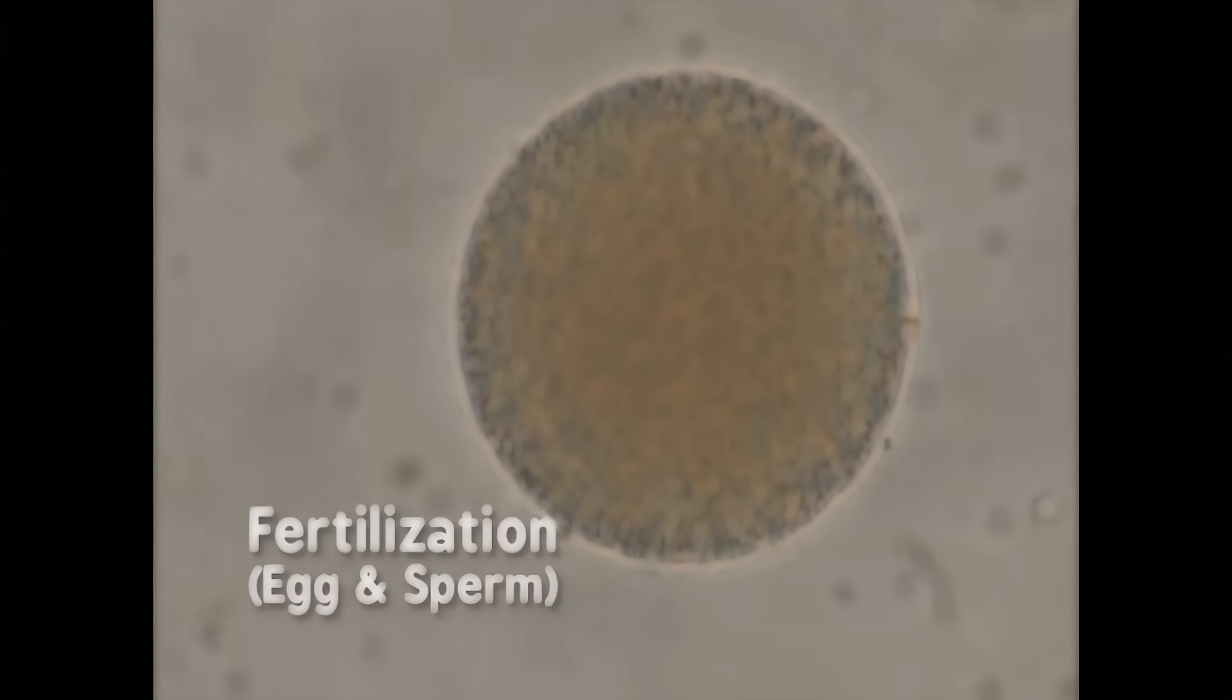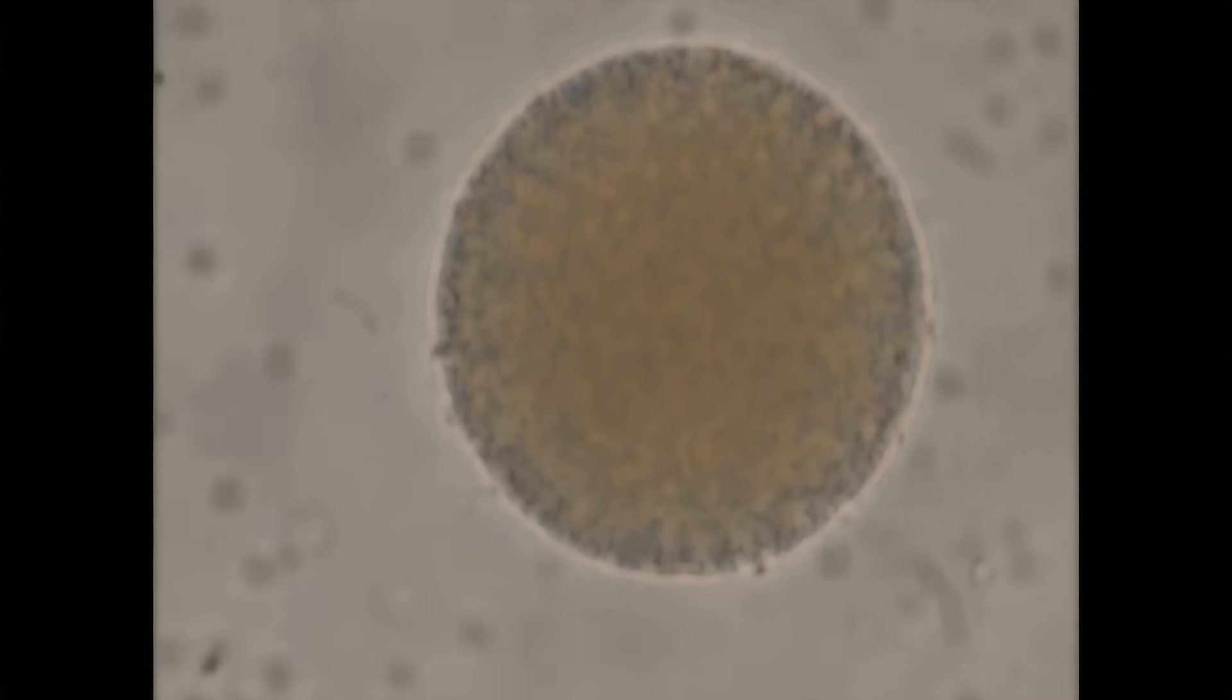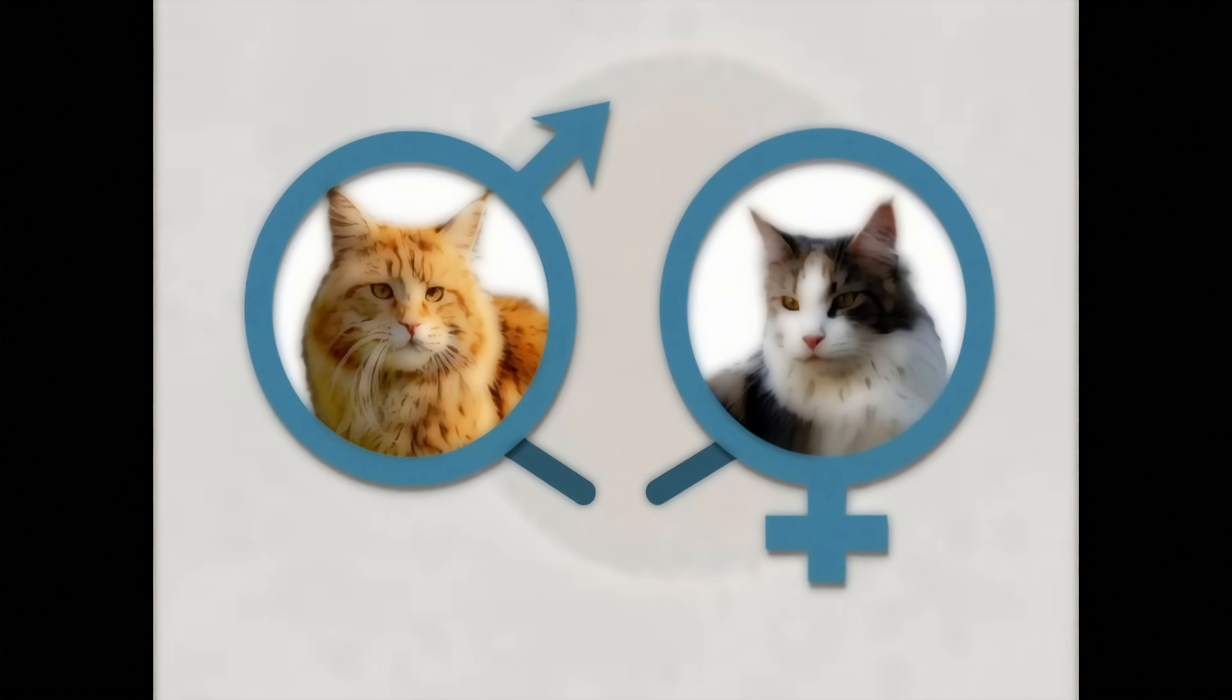Many organisms pass their genes to their offspring through sexual reproduction. This begins when two gametes unite to form an embryo that is genetically unique from the parent organisms.